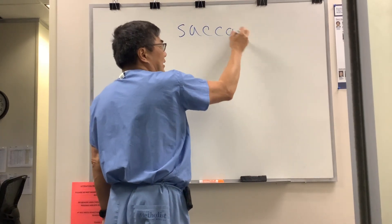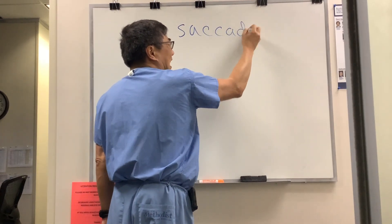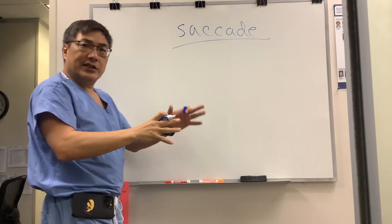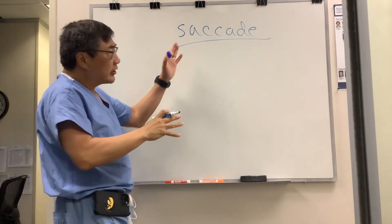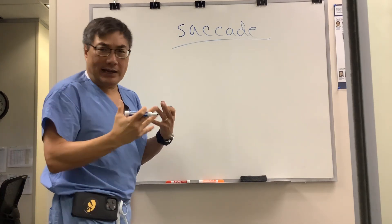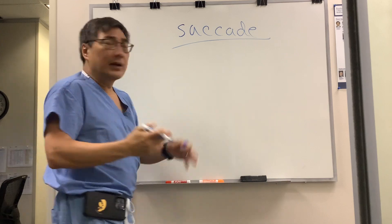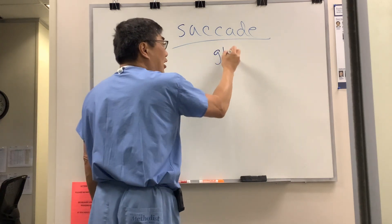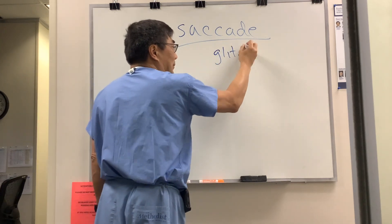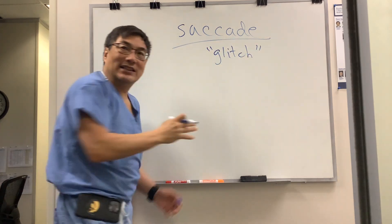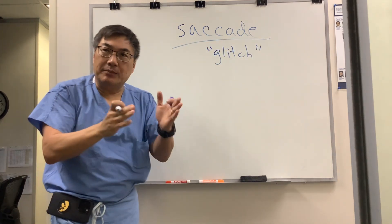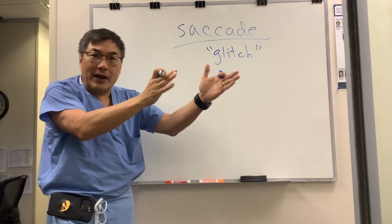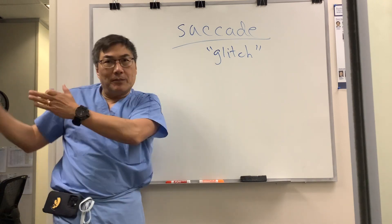We've already talked a little bit about what the difference between a saccade and a pursuit is, as well as vergence and aversion. Today we're going to talk about how someone might explain their symptom of a saccadic abnormality. The way they often describe it is that they have a glitch in their vision when trying to move their focus from one place to another.